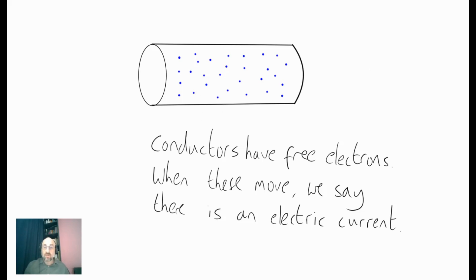Now, conductors have free electrons. In other words, they've got electrons that are free to move about. Now, when we make these electrons move by applying something called a potential difference across the wire, we'll get to that all in good time. When these electrons are made to move in a particular direction, so if they're all moving this way, we say that there is an electric current flowing in that wire. So, 9 times out of 10 at GCSE, we'll be talking about the movement of electrons, but it doesn't always have to be like that.